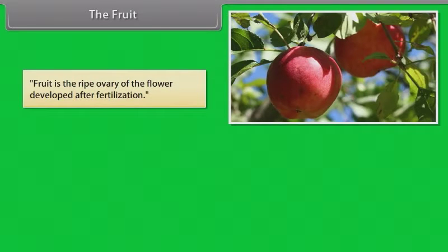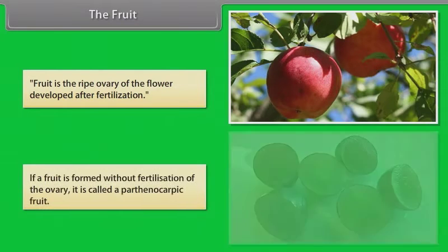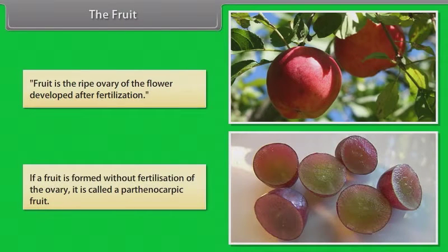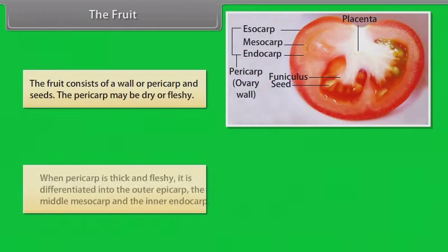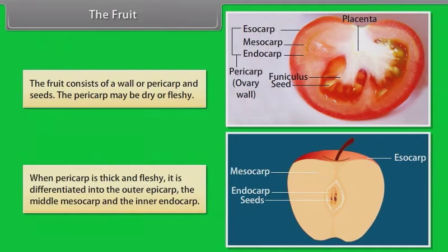Fruit is the ripe ovary of the flower developed after fertilization. If a fruit is formed without fertilization of the ovary, it is called a parthenocarpic fruit. The fruit consists of a wall called pericarp and seeds. The pericarp may be dry or fleshy.